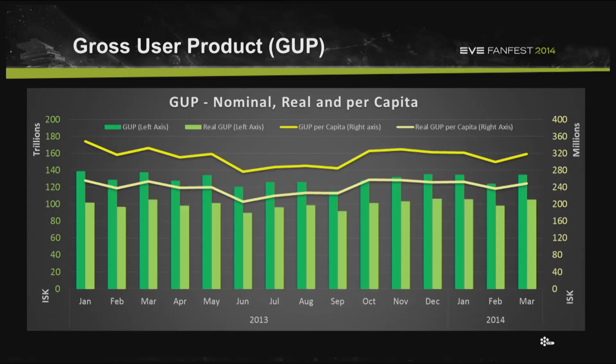The gross user product for the past 15 to 18 months — I will be adding some Q1 data since it's already Q2 in 2014, so we will have it a little bit up to date. The gross user product is the GDP of EVE Online. It is how much economic value is created within the system once you have subtracted all the cost of creating that value. And in 2013 and into this quarter, you can see there's a fairly good stability throughout the year, with a dip around mid-year — which is absolutely not true in terms of what was actually going on.